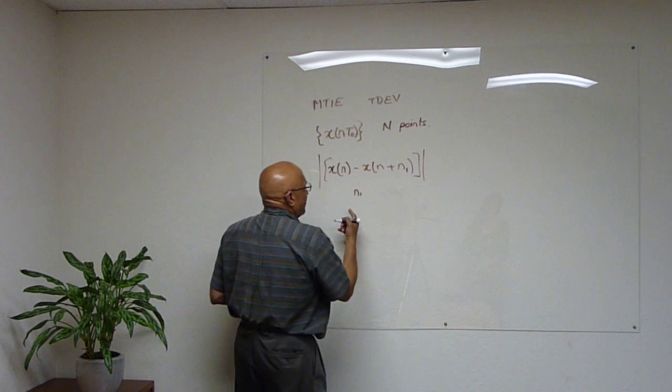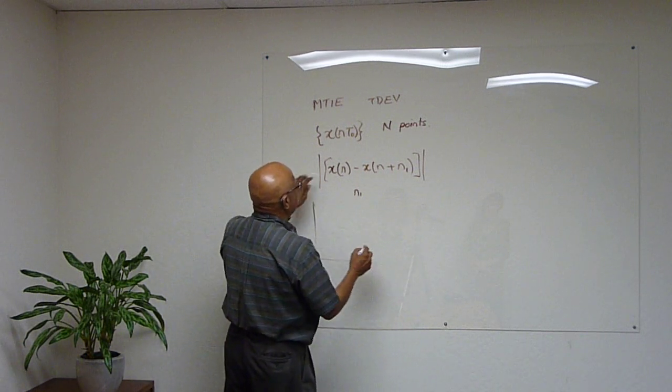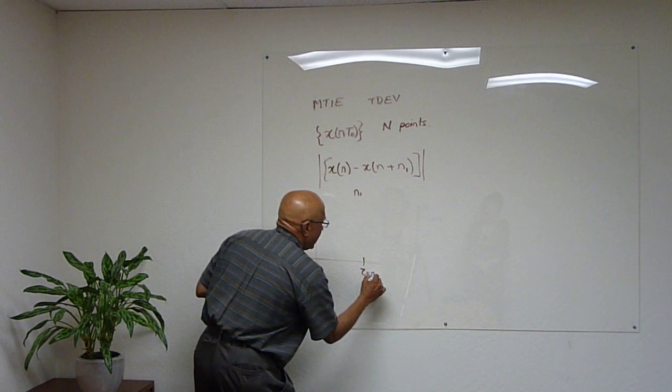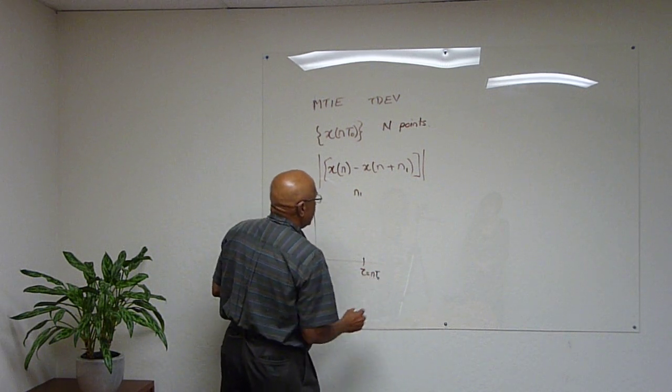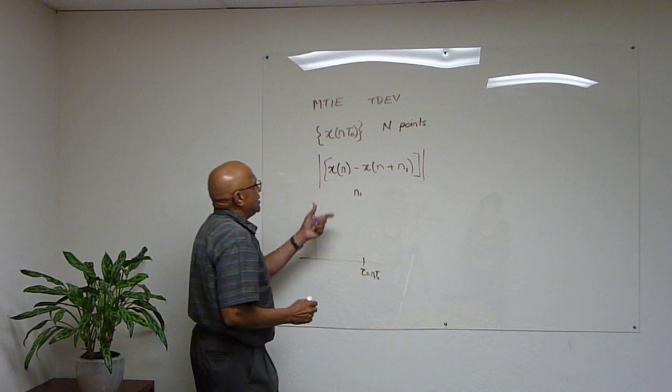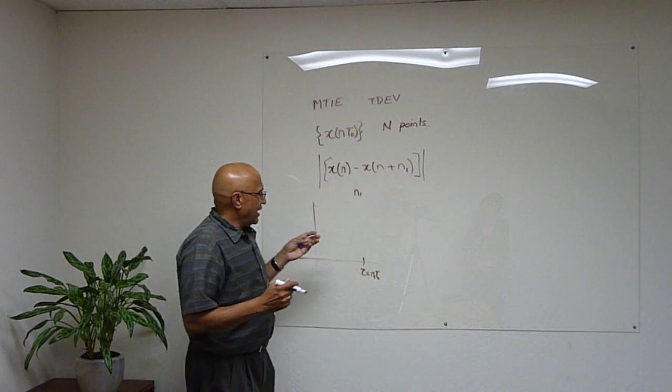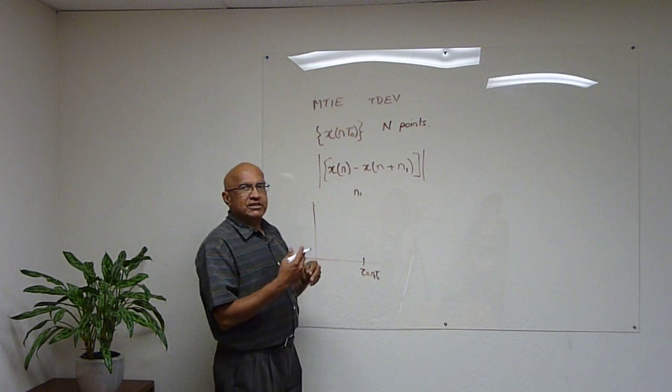And when you show the MTI plot, the worst case value of this peak-to-peak difference will show up as tau is equal to N times T sub zero N1. So you think of a difference in time, and how much the phase will change over that period of time, and take the worst case.